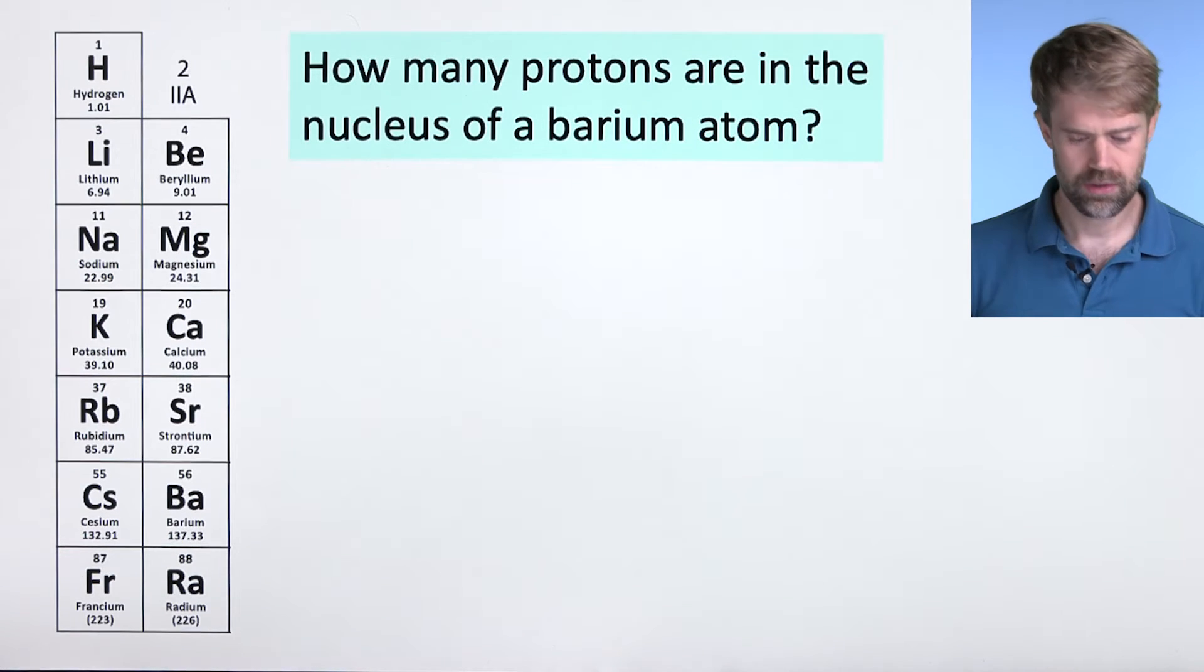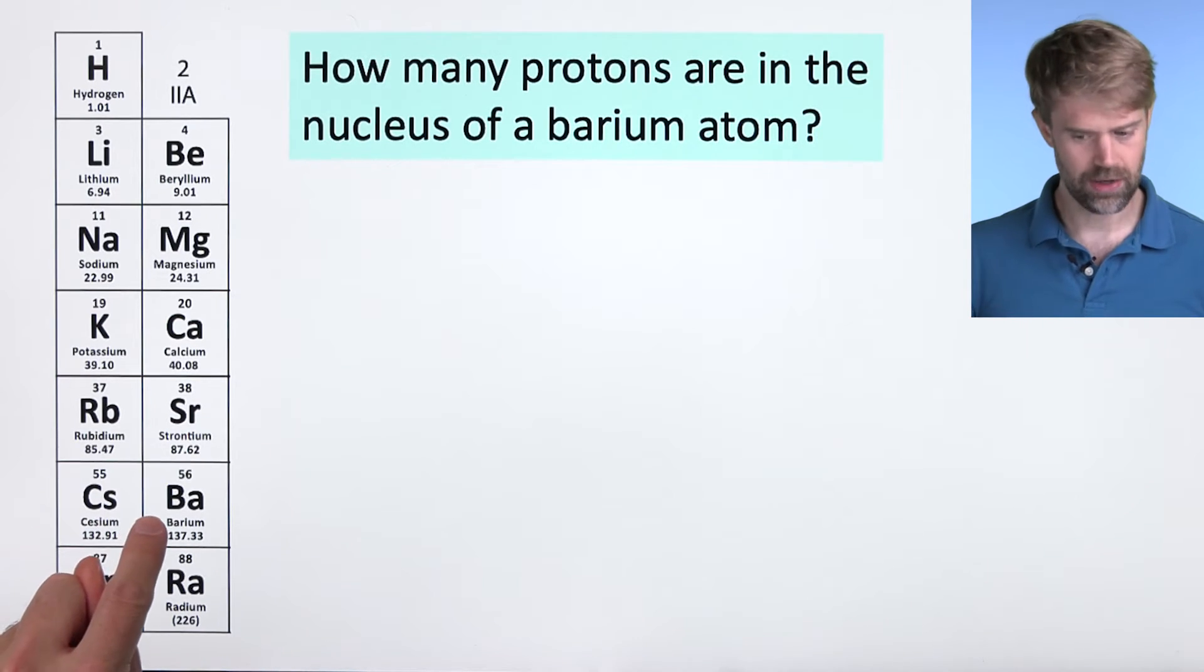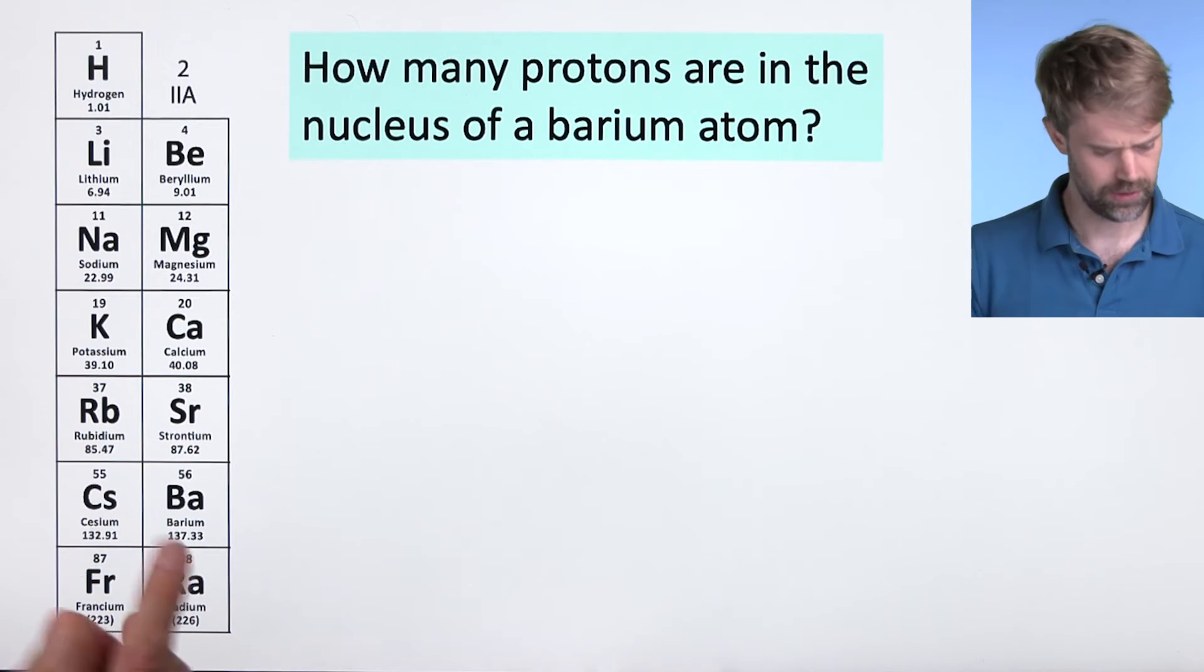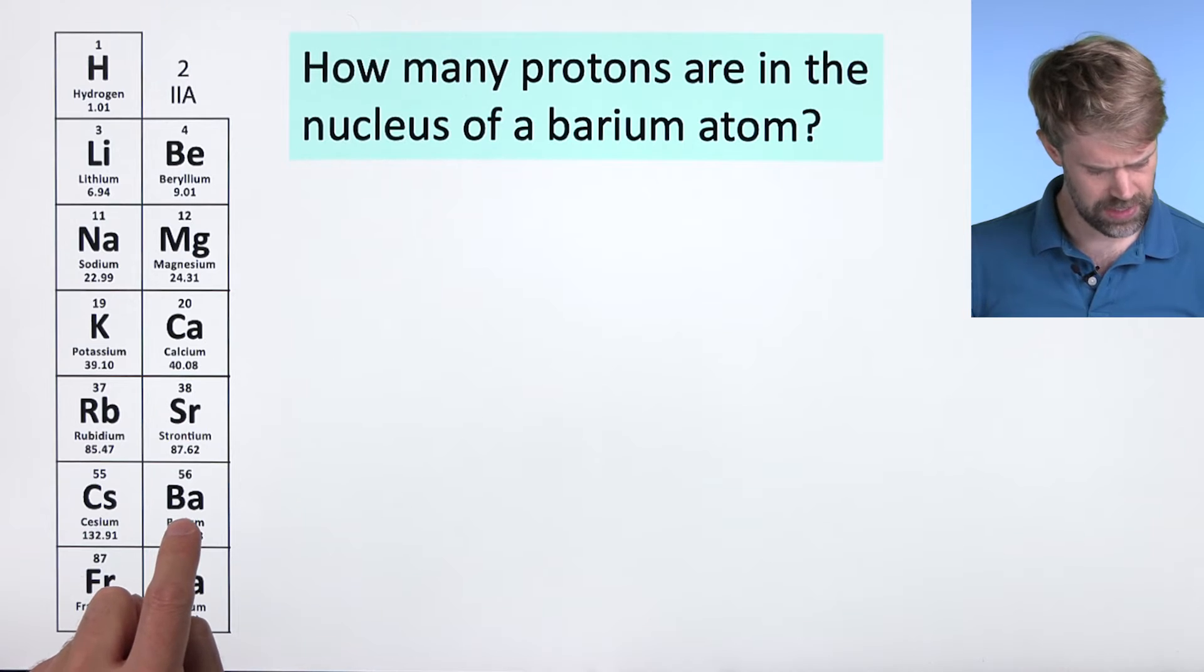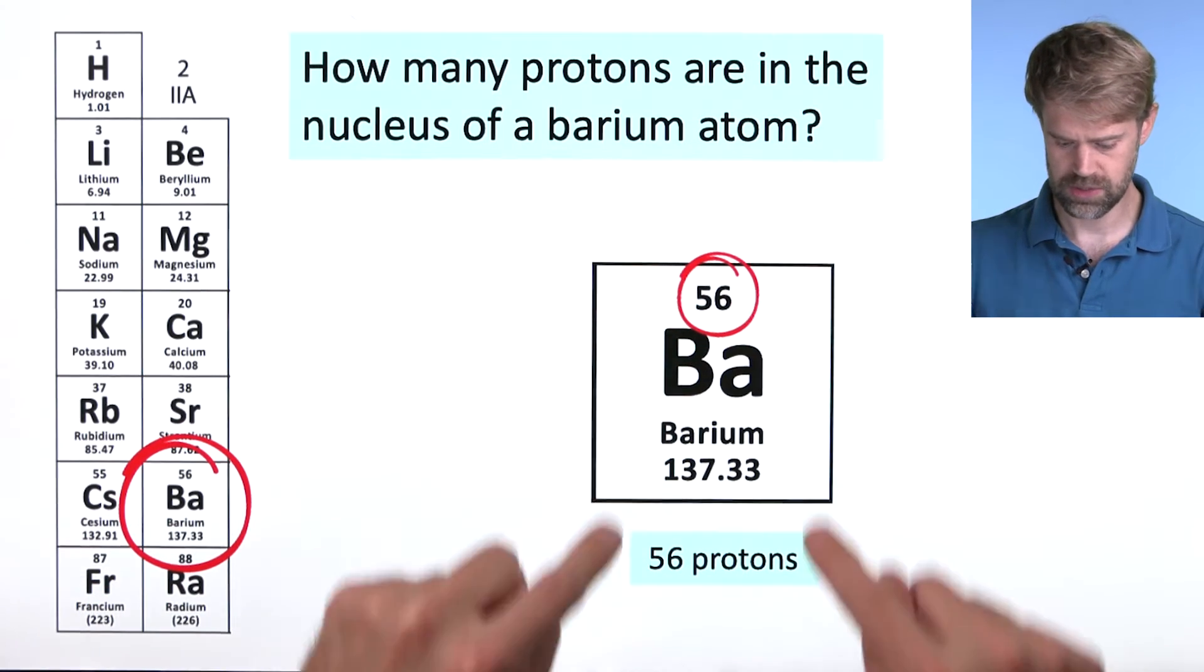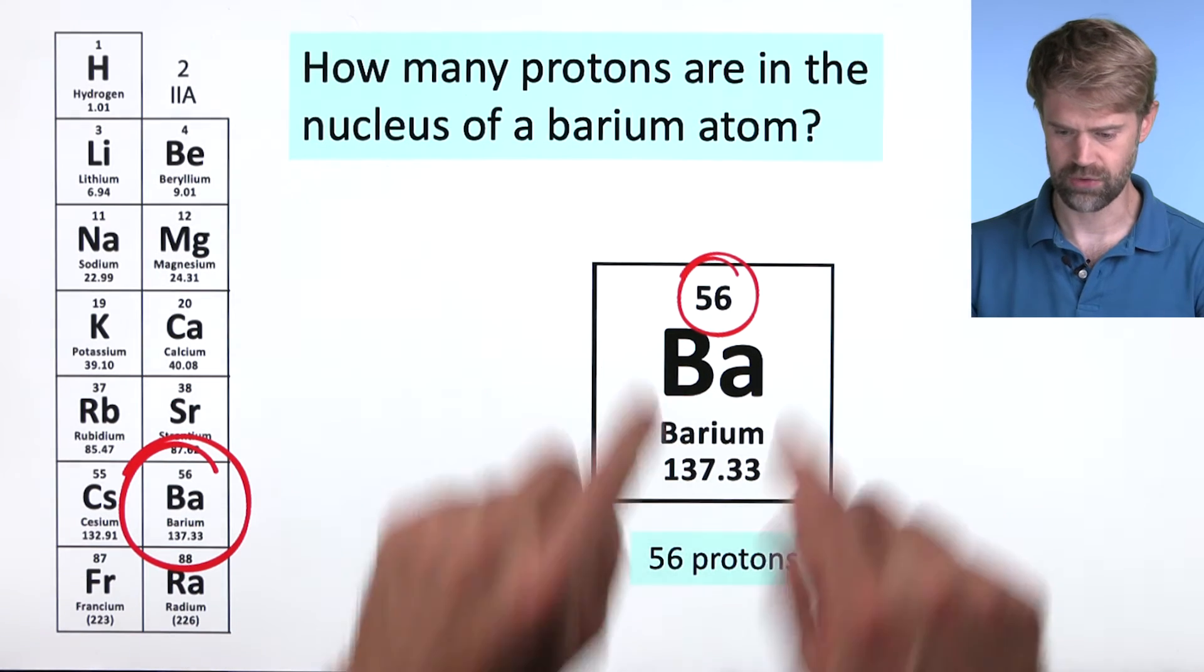How many protons are in the nucleus of a barium atom? Well, the symbol for barium is BA. It's right here. I know it's a little small on the screen but you'd be able to see the squares very clearly on the TEAS. So BA right here, atomic number of 56, which means there are 56 protons in every barium atom.